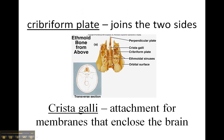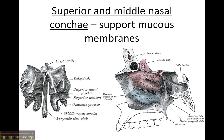The first structure you need to know is the cribriform plate. You can see right here that there are little spongy holes in it. All the cribriform plate does is join the two sides of the ethmoid bone. Then you have the crista galli that is sticking up off the middle — all that is is an attachment for membranes that enclose the brain. You will recognize this as an important structure when we dissect the cat brain, because it will be difficult to remove the membranes around the brain without pulling them free from the crista galli. There are also structures called the superior and middle nasal conchae, and they support mucous membranes in the nose.